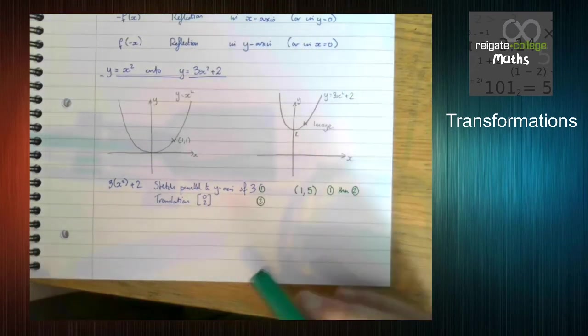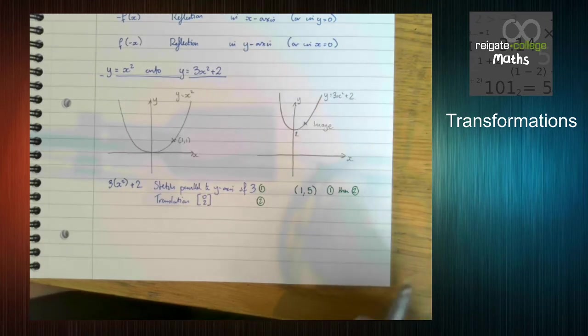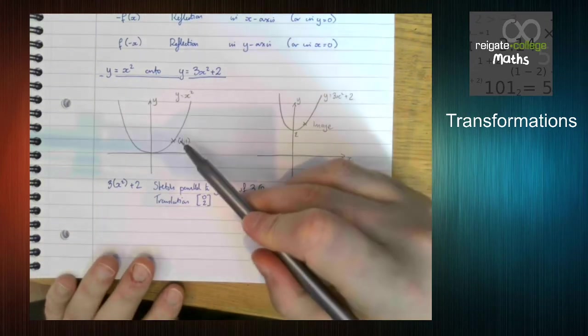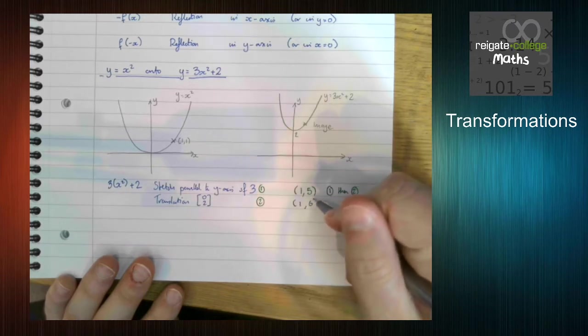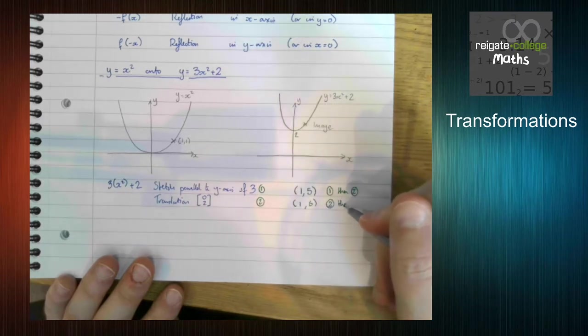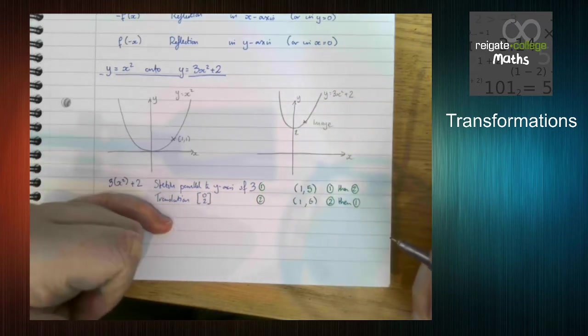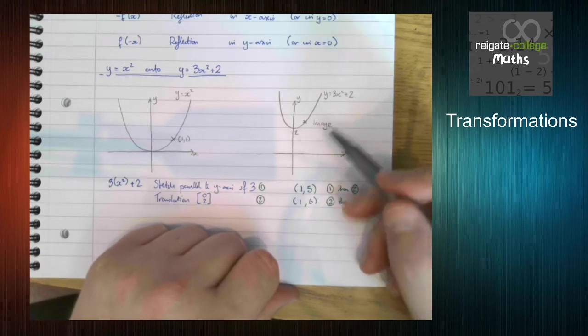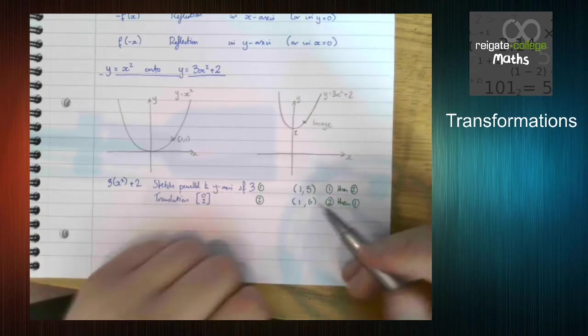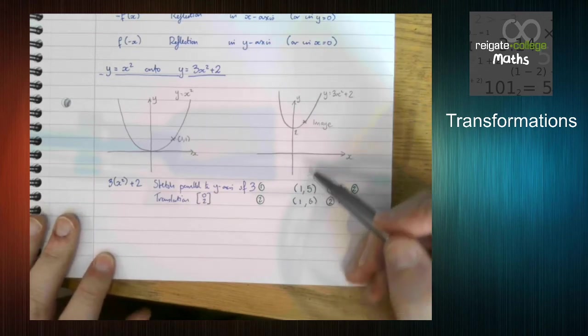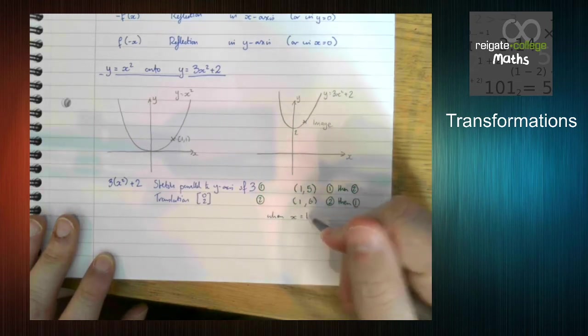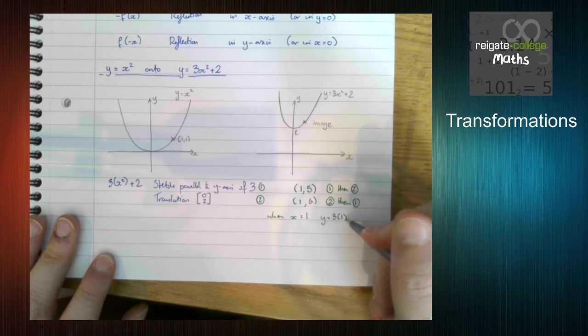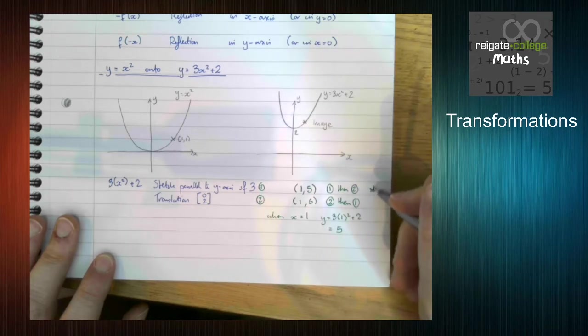Now let's have a look at what happens if we do the transformation the other way around. So if we do 2 first, that's going to add 2 to the y coordinate. We then multiply it by 3. Now because both transformations are to do with the y coordinate, the x coordinate doesn't change, which makes it very easy to work out which of them is correct. Because all we do is we know the x coordinate hasn't changed, we just stick 1 into here. And we can see when x is 1, y is 3 times 1 squared plus 2. So that's 5. So we can see that this one is correct.